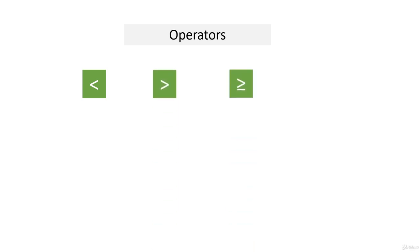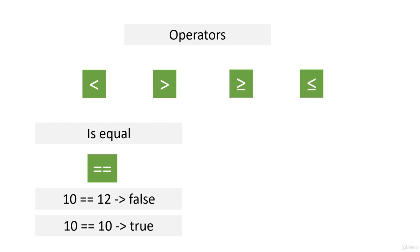Another useful operator is the equal operator. Since we use the equal sign for assignment, if we want to check whether a value is equal, we write two equal signs like this. So 10 equals 12 will result in false, and 10 equals 10 will result in true.